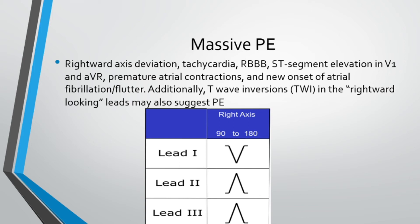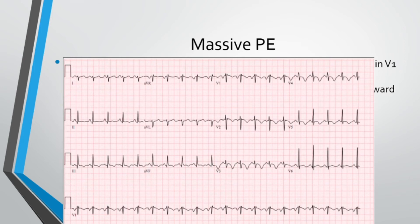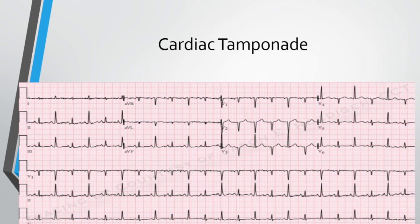On a 12-lead showing a massive PE, you can see sinus tachycardia and T-wave inversions in V1 through V5, indicating right ventricular strain, along with right axis deviation. For cardiac tamponade, you also see sinus tach, but look closely — the QRS complex alternates between tall and short. This is called electrical alternans, caused by the heart swinging back and forth within the fluid-filled pericardial sac.